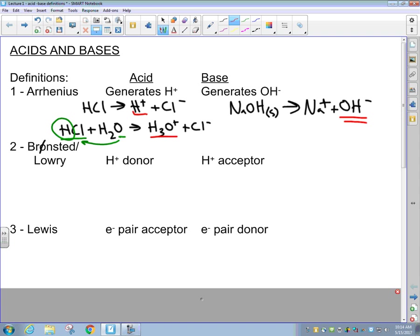The next definition that we have, in 1923, two scientists, Lowry and Bronsted, proposed that any substance that donates a proton is an acid and any substance that accepts a proton is a base.